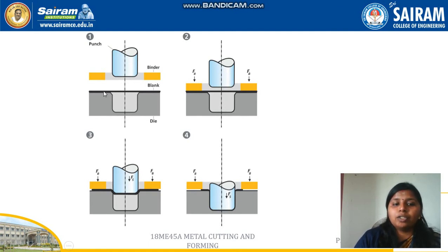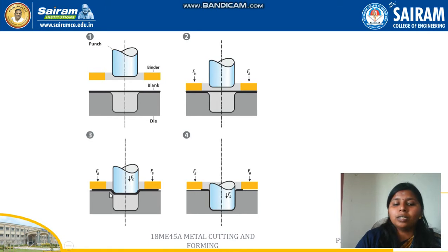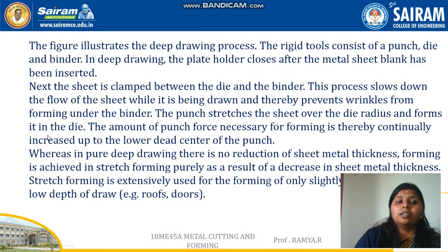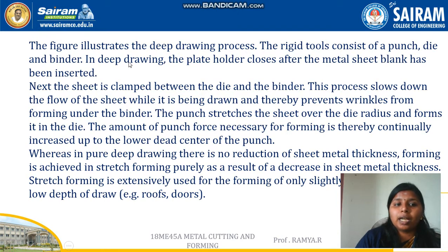In diagram one, it shows the blank sheet metal. In the second one, the punch is moved towards the sheet metal with a little force so that it deforms slightly. In the final one, the final shape of the required sheet metal is obtained. The figure illustrates the deep drawing process. The rigid tool consists of a punch, die, and a binder.